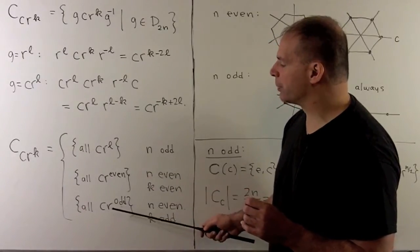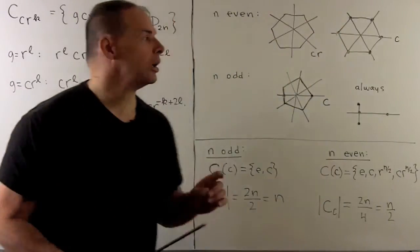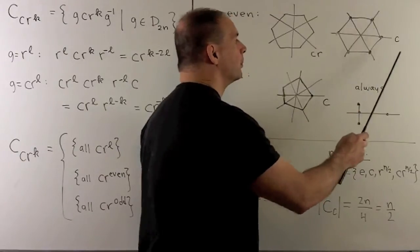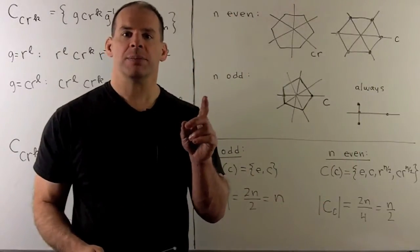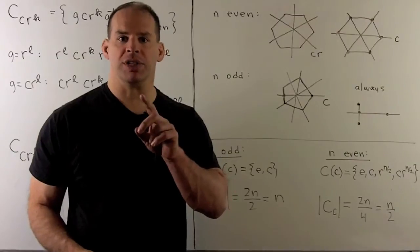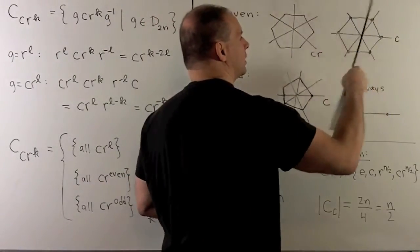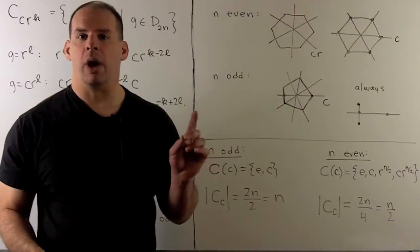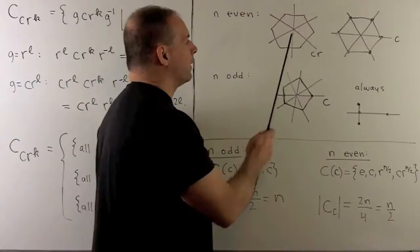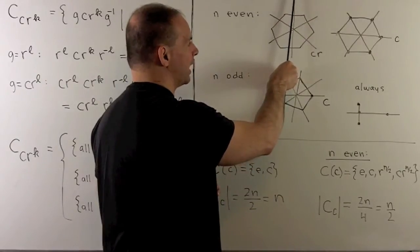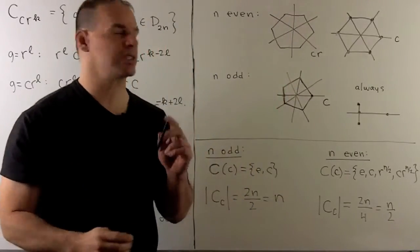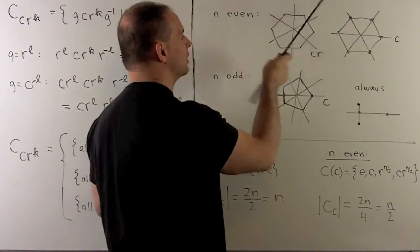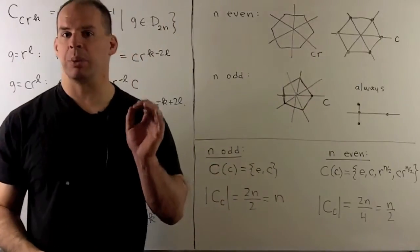There's a nice picture for this. For the reflections where the exponent is even, we're looking at reflections that fix two opposing vertices. So we're going to have this, this, and this. On the other hand, when the exponent is odd, we're going to have reflections that fix two opposing edges, not point-wise, just these opposing edges get mapped back to themselves. So this, this, and this. We get a nice clean split.